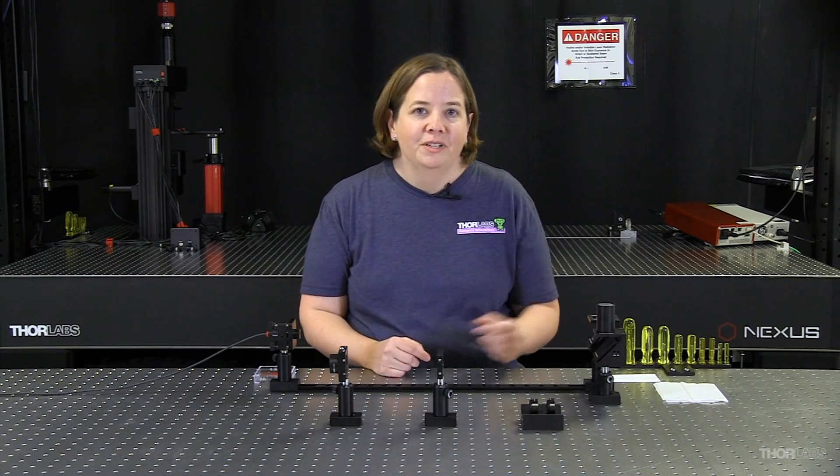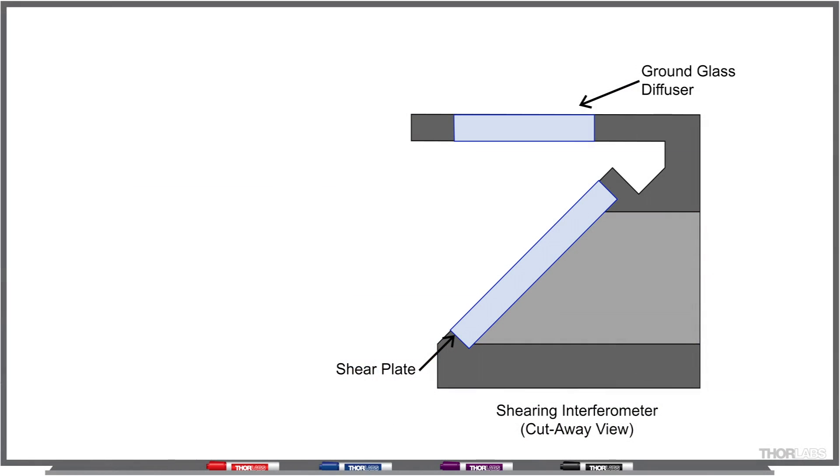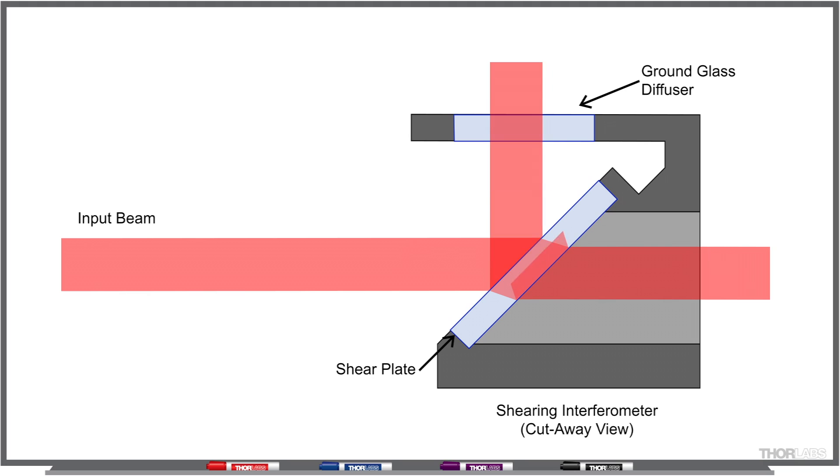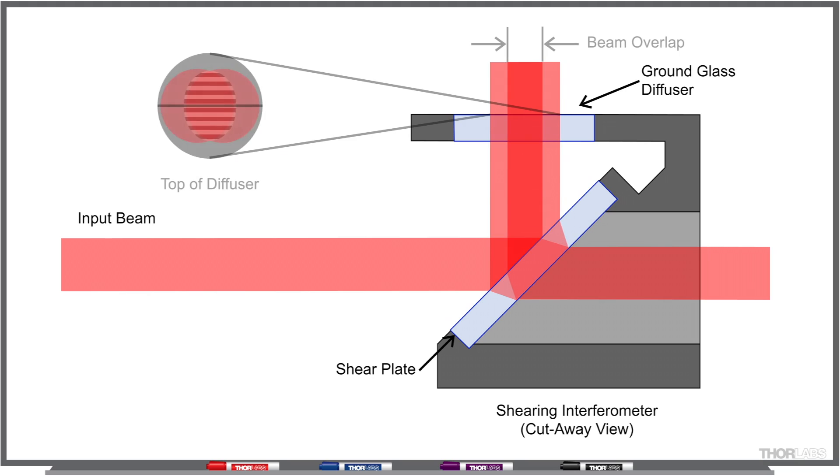But let's first look at how a shearing interferometer works. If we send the input beam in from the left, we get a reflection off both the front surface and the back surface of the wedged shear plate. The two reflected beams partially overlap and interfere.